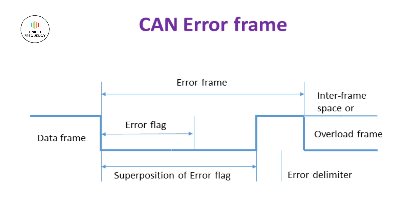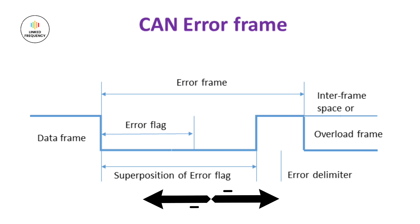When an error frame is transmitted, it has a higher priority than any other type of frames in the CAN protocol. This priority ensures that the error conditions are communicated and given immediate attention by all the nodes on the CAN bus. Upon receiving an error frame, all the nodes monitor the bus state and perform error handling procedures. These procedures typically involve error logging, error counter incrementing, or error recovery mechanisms depending on the severity of the errors. The error frame is also represented on the screen for reference.